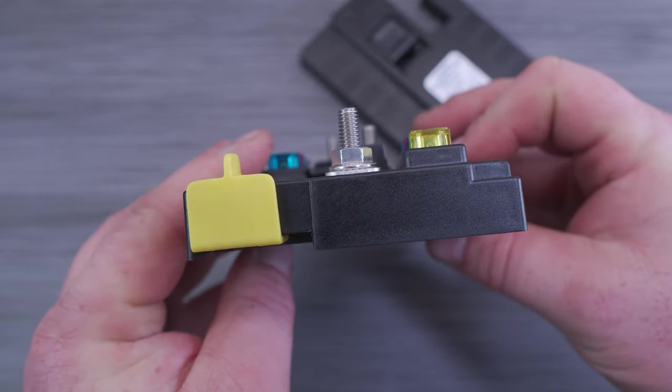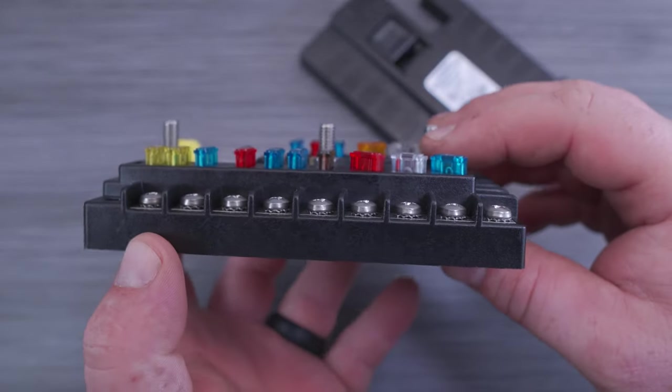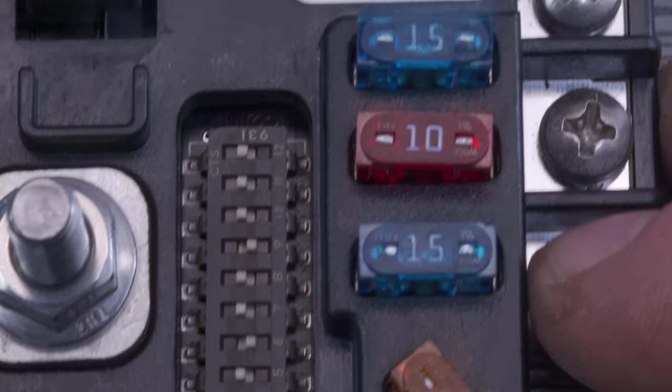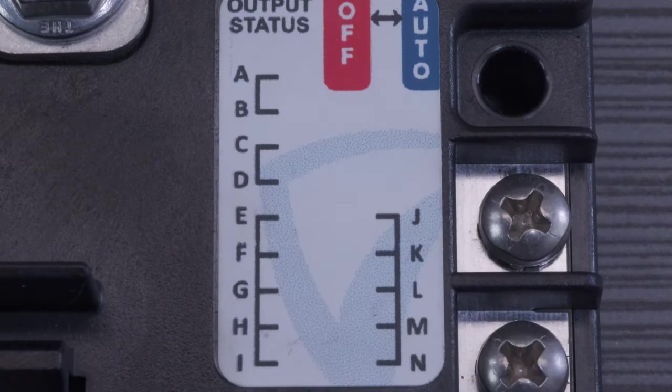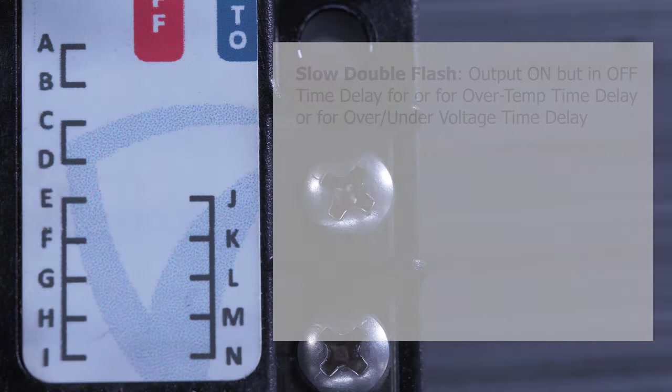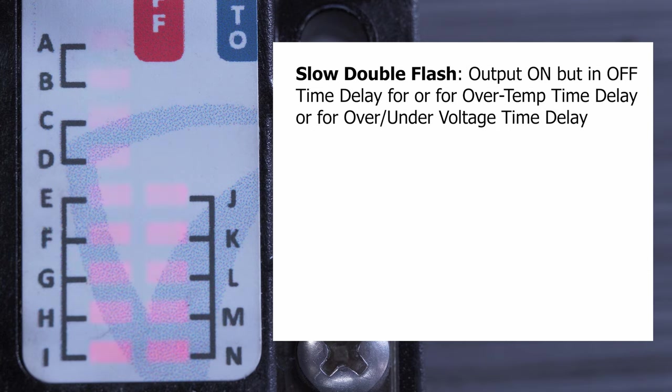These are great to see if anything goes wrong and are amazing for troubleshooting. Back up here on this label, if you see a steady on LED then that indicates the output is on and conversely if it is off then the output is in the off state.